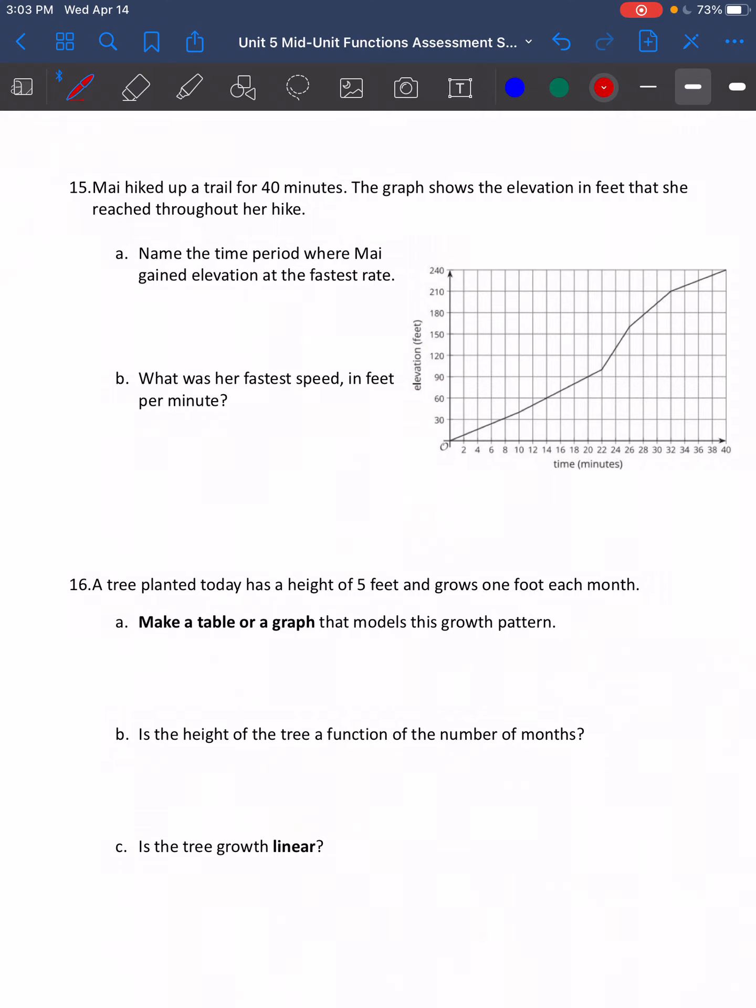May hiked up a trail for 40 minutes. The graph shows the elevation in feet that she reached throughout her hike. Name a time period where May gained the elevation at the fastest rate. So if we look right here, we're looking for when did May gain the most amount of elevation in the shortest amount of time? Remember what we talked about. The steeper our line is, the faster the rate is, or the more the rate is. The steepest part of our line is starting here and going all the way up to this point right here. That's the steepest part of our graph. If we want to know the time period, I want to know when it starts and when it ends. If I go down, down, down, down, I know it starts at 22 minutes and it goes to 26 minutes.